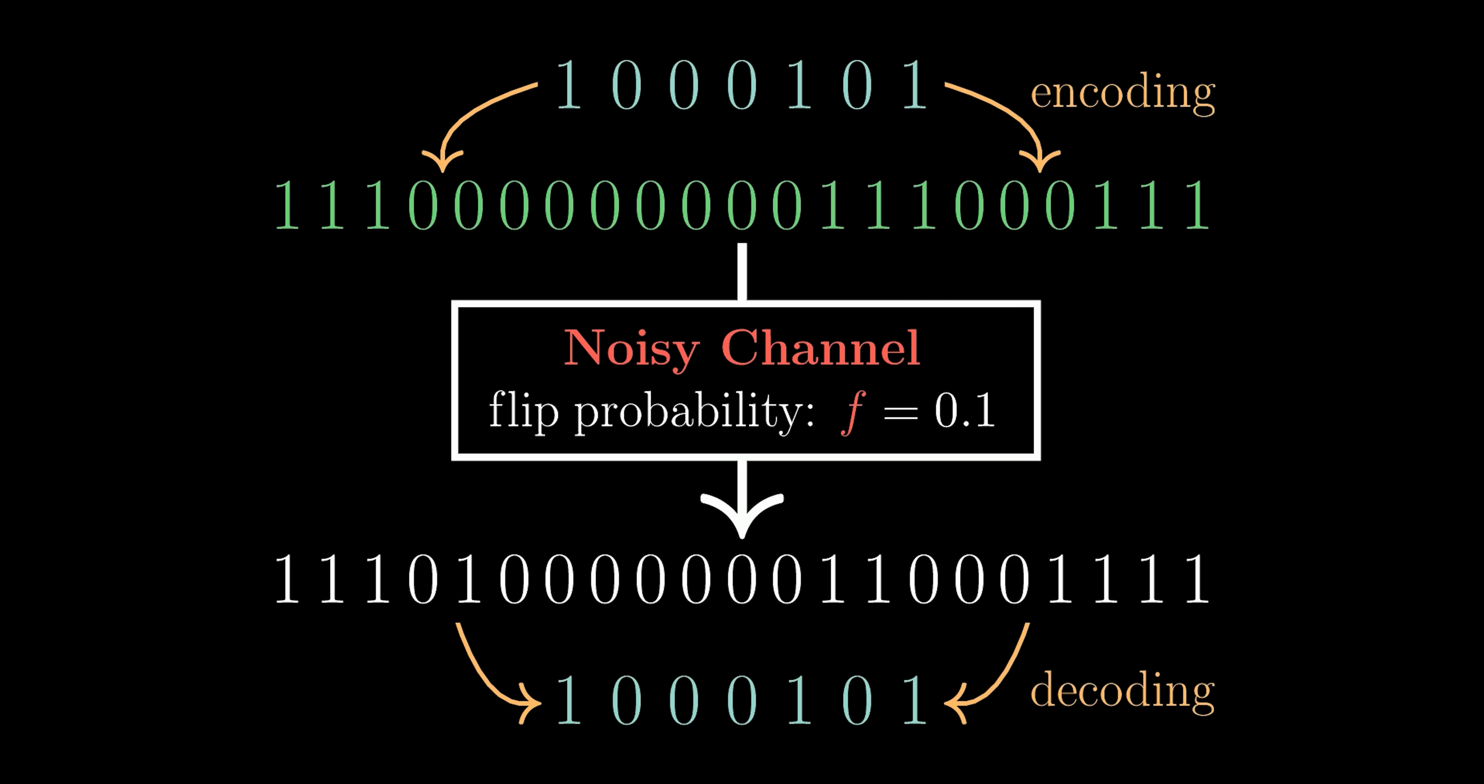In general, over a lot of messages, this strategy creates fewer than the 10% errors we'd expect if we just sent the original messages straight through. But errors can still happen. On another pass through the channel, we might have gone unlucky with two or more bits flipped in one chunk, and that would create an error in the decoded message. So the error probability is reduced, but not eliminated.